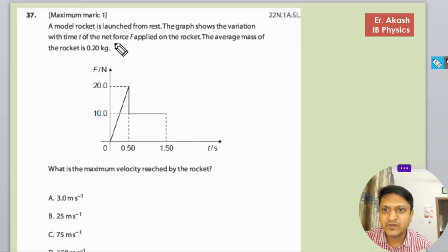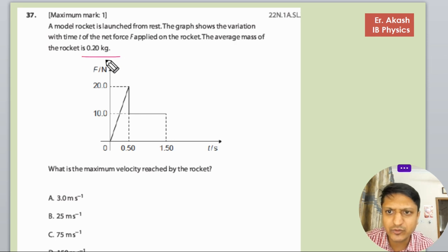There's another question. The question says a model rocket is launched from rest. The graph shows the variation with time t of the net force F applied on the rocket. The average mass of the rocket is 0.2 kg and the graph is given.